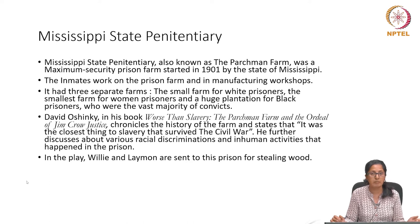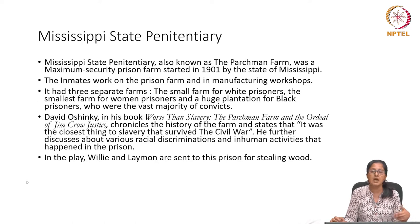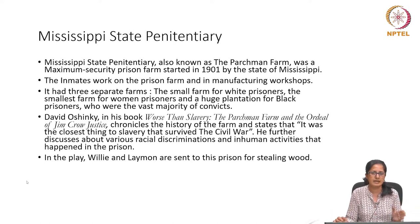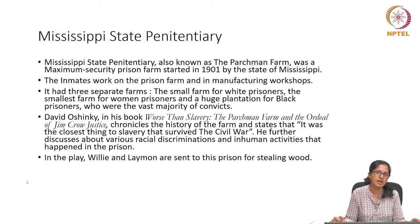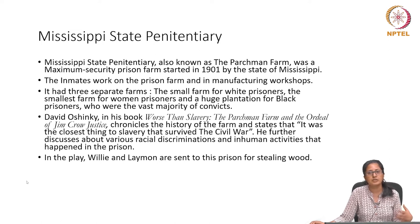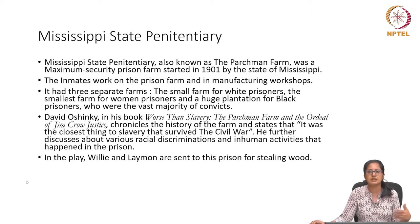In his book Worse Than Slavery: Parchman and the Ordeal of Jim Crow Justice, David Oshinsky discusses the history of this farm, stating it was the closest thing to slavery that survived the Civil War. The presence of the Parchman Farm in the play tells us that the practice of slavery did not essentially end with the Civil War — it continued in different forms. The vocabulary changed, but the conditions remained the same.